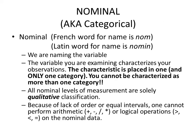The first level of measurement is nominal, also called categorical. Nominal basically means naming the variable — it comes from the French word 'nom' and the Latin word 'nomin,' both meaning name. The variables you examine simply characterize your observations, and each characteristic is placed in one and only one category. All nominal levels of measurement are solely qualitative classification.